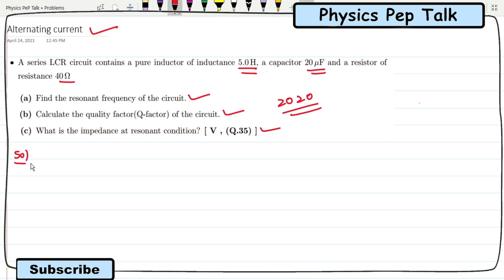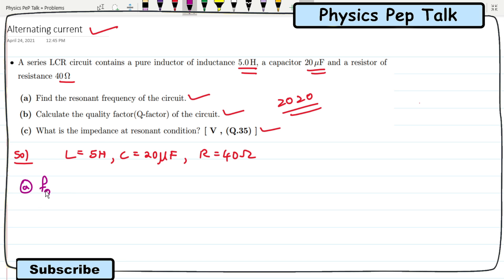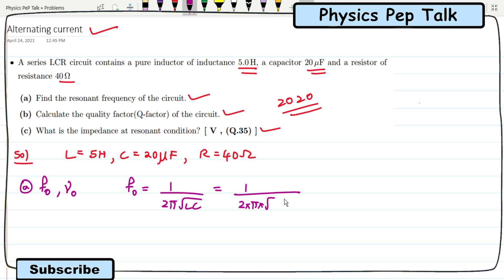They have given that they have used an inductor of 5 henry, a capacitor of 20 microfarad, and a resistor of 40 ohms. In part A they are asking us to find out the resonating frequency. Resonating frequency is denoted as F0. So the formula for resonating frequency is F0 is equal to 1 by 2 pi root LC.